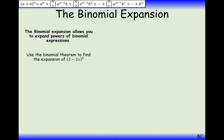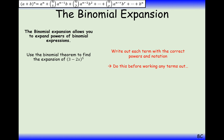Let's have a go at a question using the binomial formula. We're going to expand (3 minus 2x) to the power of 5. We set a equal to 3, b equal to minus 2x, and n equal to 5, then substitute all of these values into the binomial expansion formula.